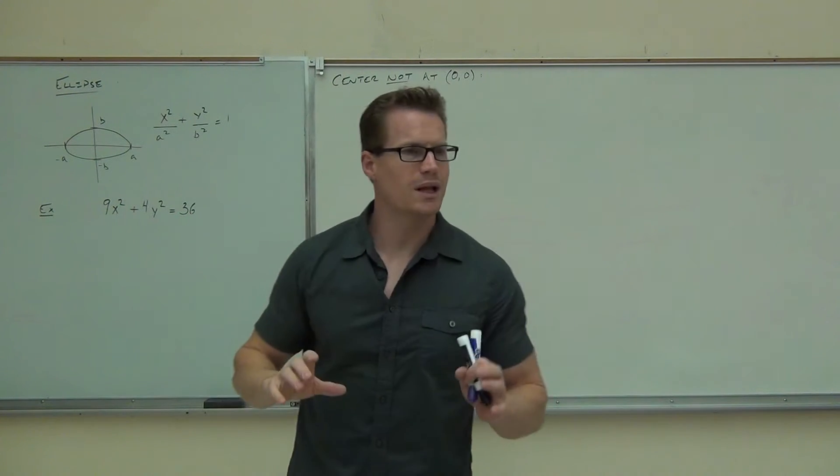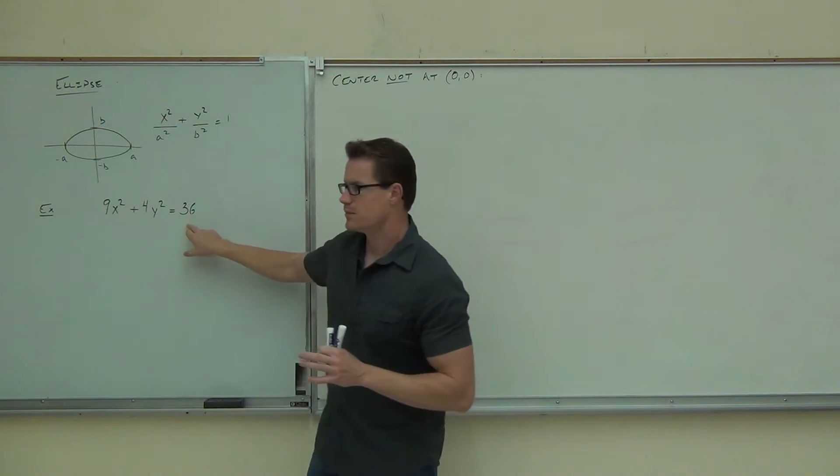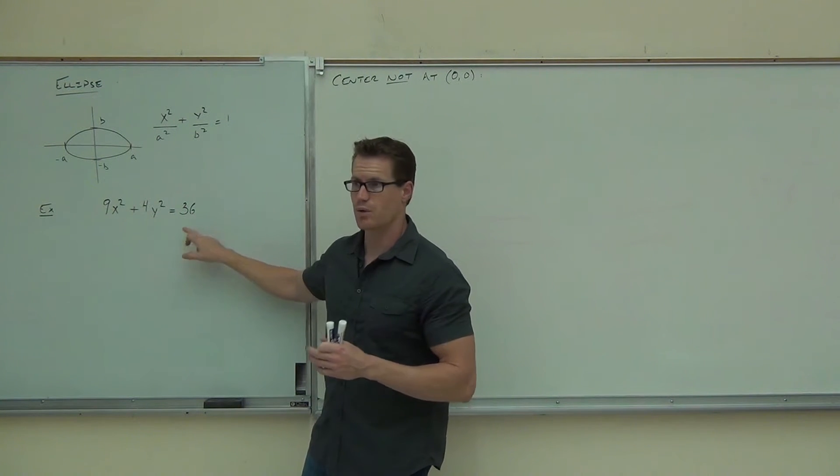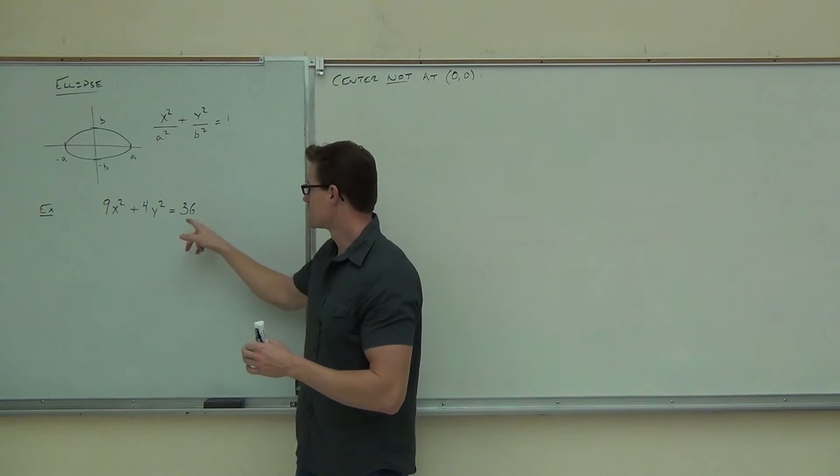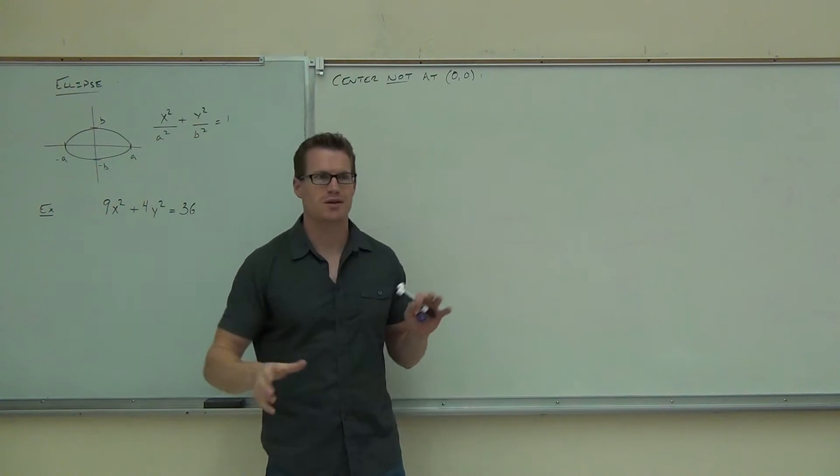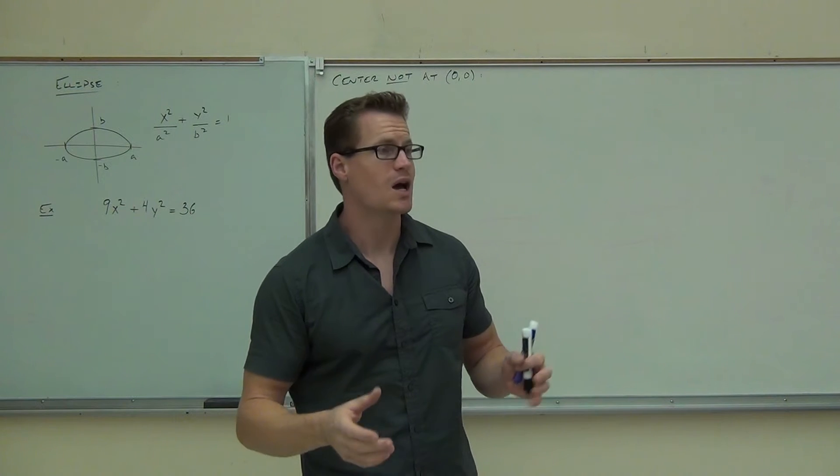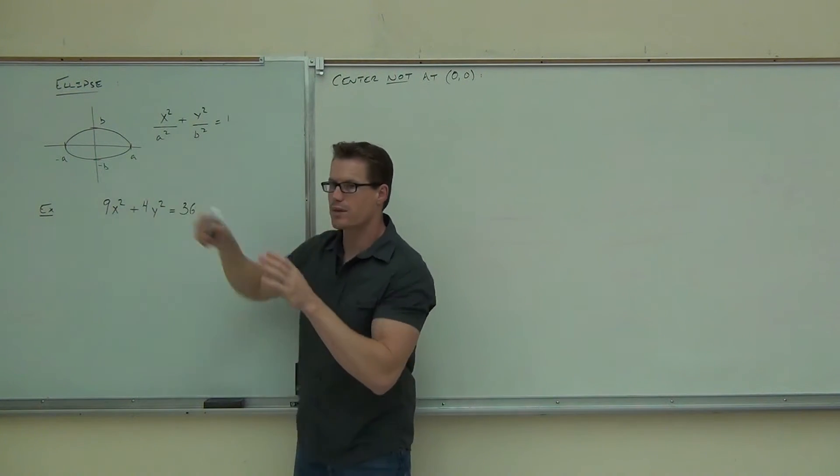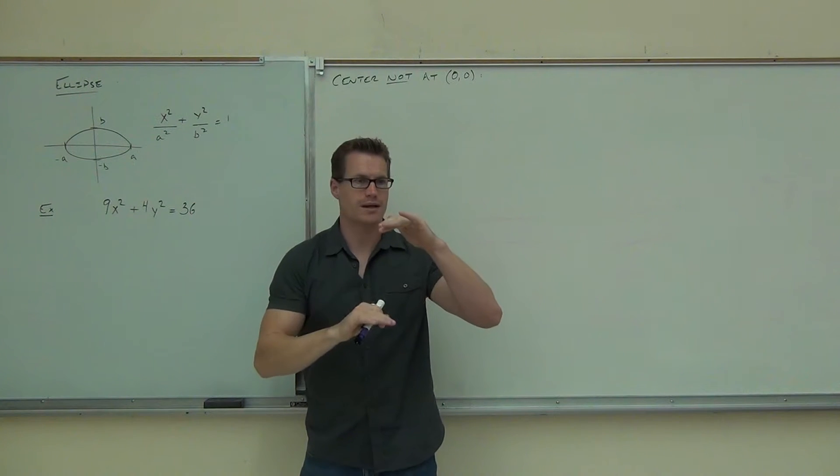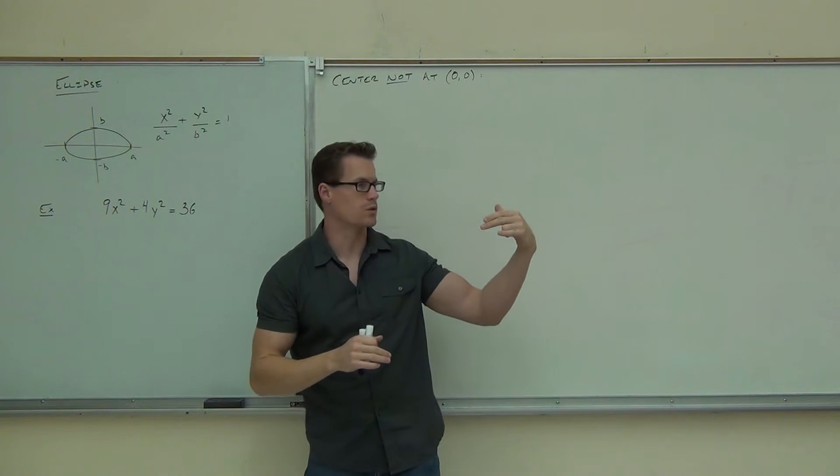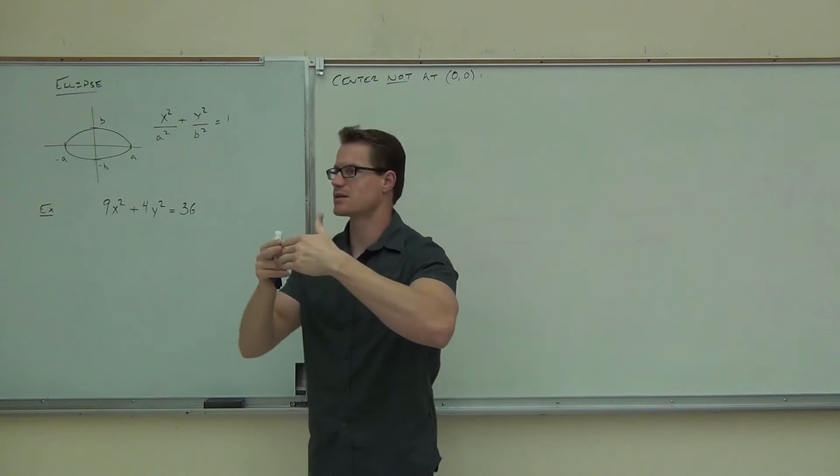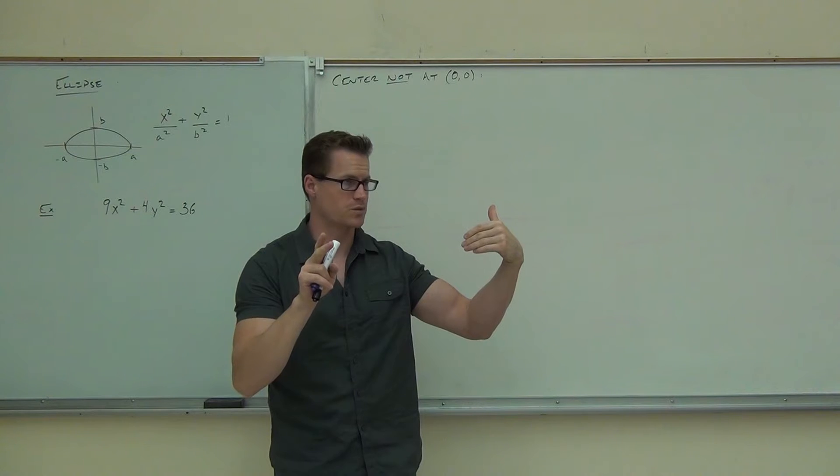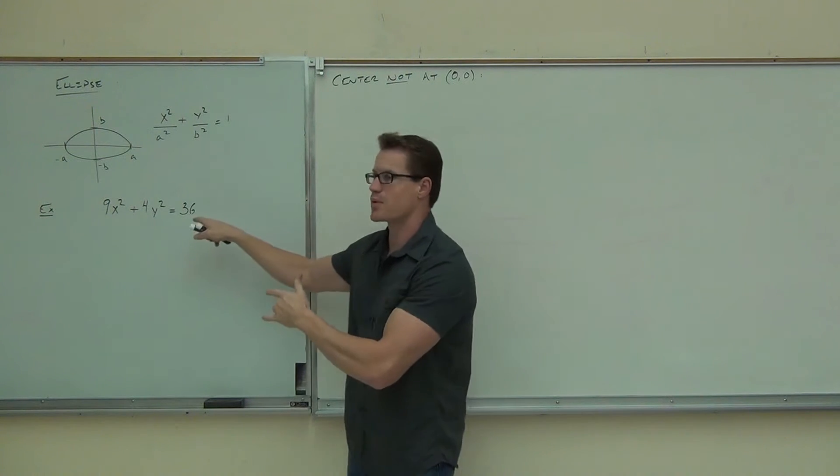Now, with ellipses, we don't really like to have this number over here that's not a one. So, how do we get rid of that number? Divide by 36. First thing we're going to do, make sure we get a one over here. That means we're going to divide by 36, making sure we get it into this format. We'll look underneath the x, that'll tell us how far we go on x direction, plus and minus. Look underneath the y, that'll tell us how far we go on y direction.